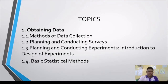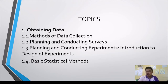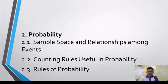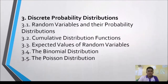Our first topic is Obtaining Data, covering methods of data collection, planning and conducting surveys, planning and conducting experiments as an introduction to design of experiments, and a review of basic statistical methods. The second topic is Probability, covering introduction to probability, sample space and relationships among events, counting rules, and the rules of probability. The third topic is Discrete Probability Distributions, with lessons on random variables, probability distributions, cumulative distribution functions, expected values of random variables, the binomial distribution, and the Poisson distribution.